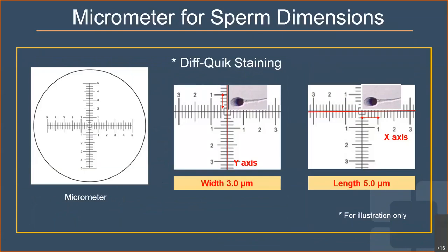The importance of using a micrometer: the reticle has a crossbar with x-axis and y-axis showing 5-centimeter graduations, each graduation equaling one micrometer. To examine sperm dimensions, place the reticle on the sperm — on the y-axis to check the width, and lengthwise to measure the length on the x-axis. For example, a sperm with a width of 3 micrometers and length of 5 micrometers is an example of a normal sperm dimension.